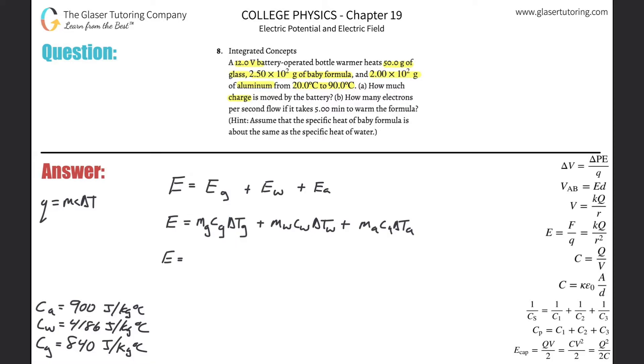Now I can write the change in temperature of all the objects, which is the final temperature minus the initial, which is 90 degrees Celsius minus 20. Remember, you do not have to convert that into Kelvin. You can if you like, but the difference between the two will be exactly identical. Then multiply by the mass of the glass times the specific heat of the glass, plus the mass of the water times the specific heat of the water, plus the mass of the aluminum times the specific heat of the aluminum. Hopefully that makes sense. All I did was pull out a common delta T.